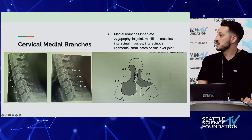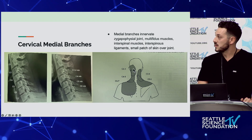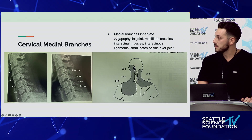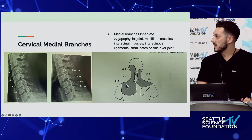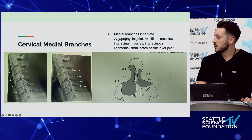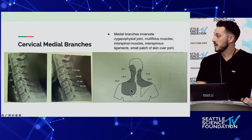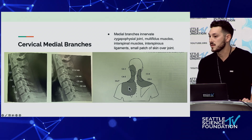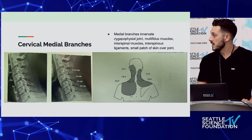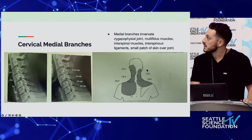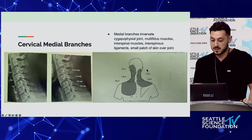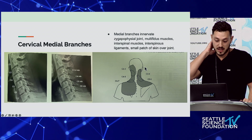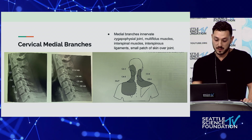These are some of the referral patterns in terms of where patients are going to have pain referring from each joint. At C2-3, the third occipital nerve is going to come up. I don't find it super common that people are having lower facetogenic pain - generally pain down into that area is going to be from a C7 radiculopathy - but you can get it. Just know your referral patterns.